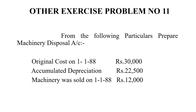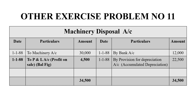We can create a ledger — machinery disposal account. On 1188, the value of machinery is $30,000. From the previous year, the balance has been brought down here.